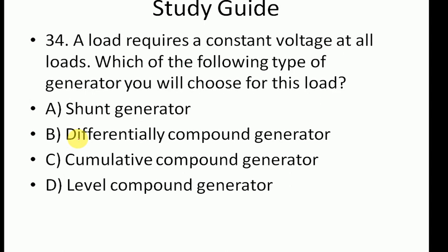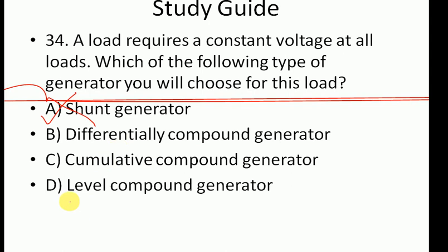Question 34: A load requires constant voltage at all loads. Which of the following type of generator will you choose for this load? Options include: A) series generator, B) differentially compound generator, C) cumulative compound generator. For constant voltage, you would use a shunt generator, but level compound generator is not a type of generator - it is a characteristic of a generator.